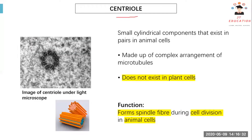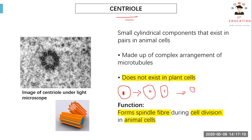Moving on, next will be the centriole. Centriole is very important in a process called cell division. In our body, one cell will try to divide into two cells through cell division, and then two will divide into four cells. Spindle fiber formation requires centrioles. Centrioles form spindle fibers during cell division in animal cells only, and they do not exist in plant cells.